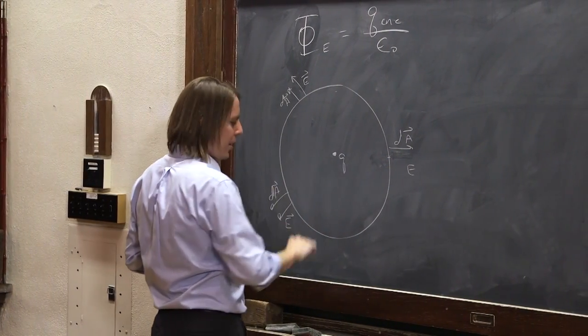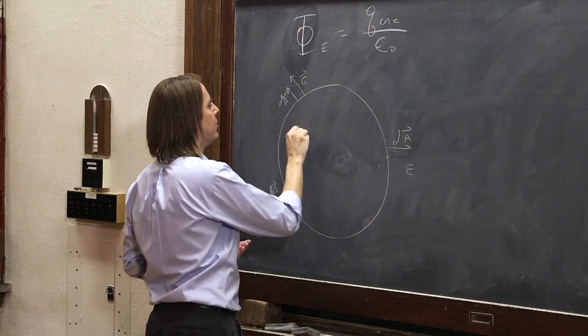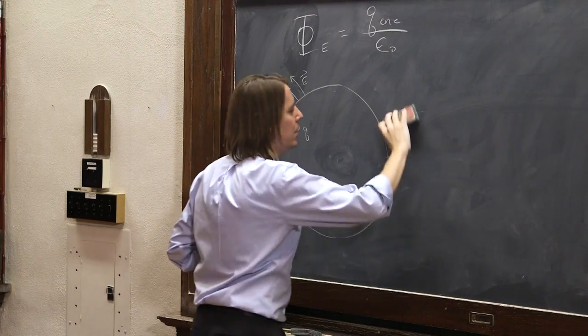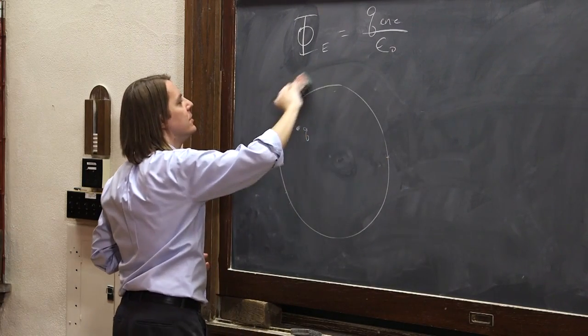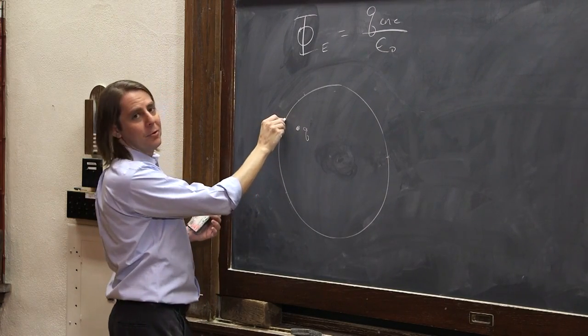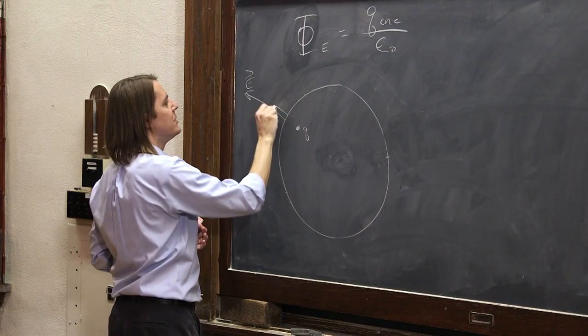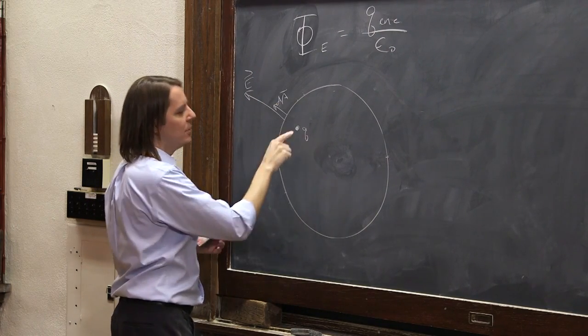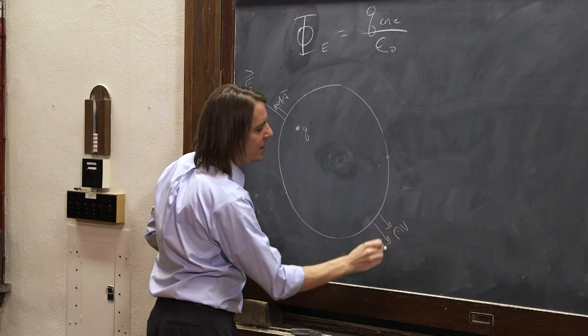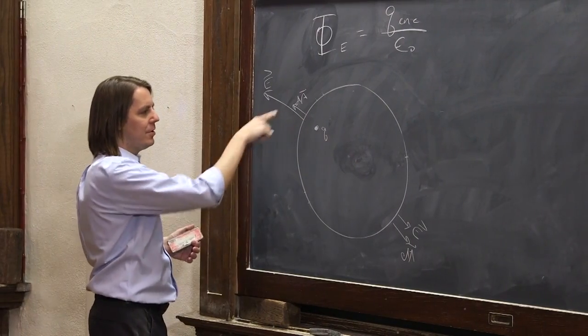But Gauss's law doesn't require this charge to sit here. What if we had the charge up here? That's going to change all kinds of stuff if the charge is there. If the charge is there, we can think about the vectors again. Right here, it would look very much the same, except the field would be bigger. So your E might look like that. But your DA would still be there. That'd be good. Down here, your E might be a little bit smaller, because it's farther away. But your DA would still be there.